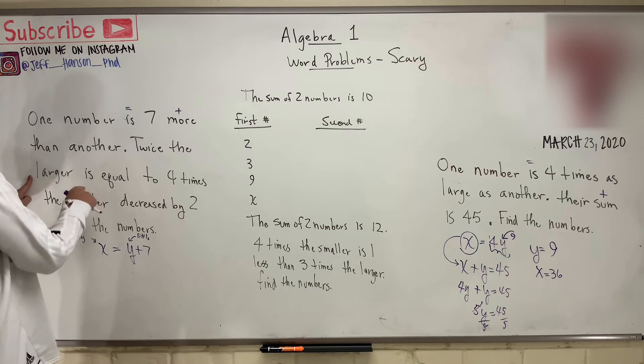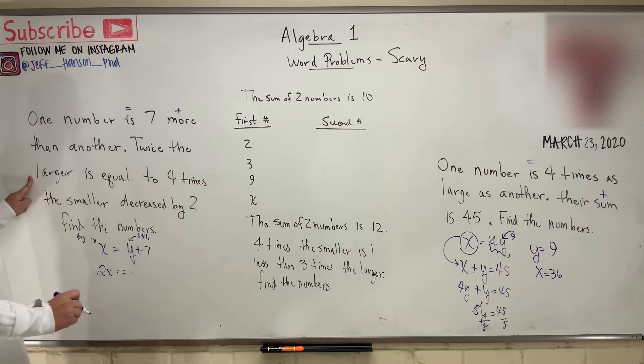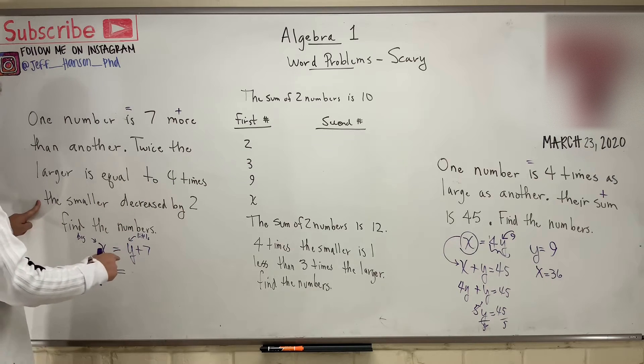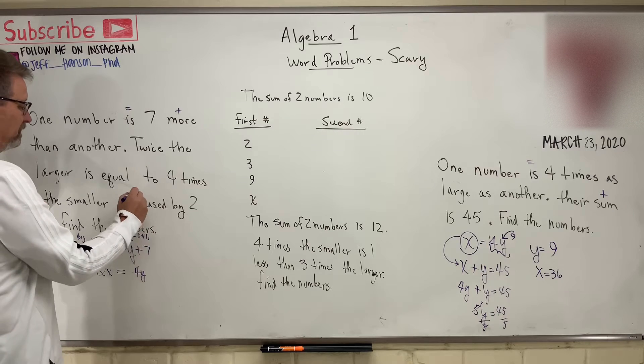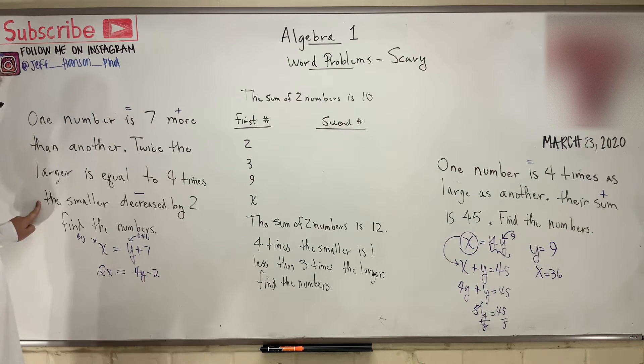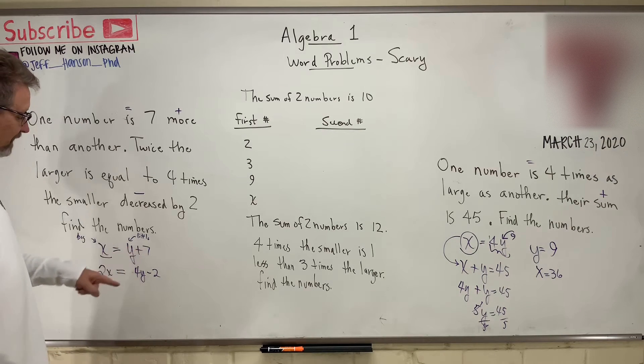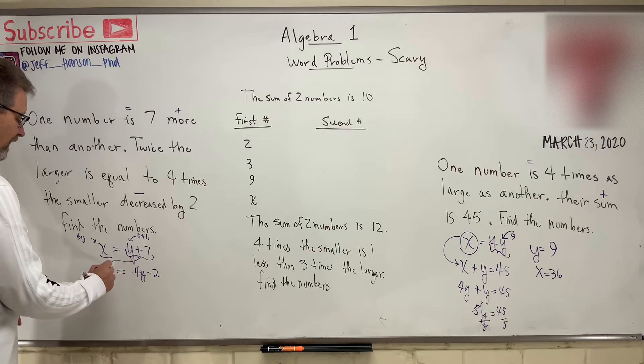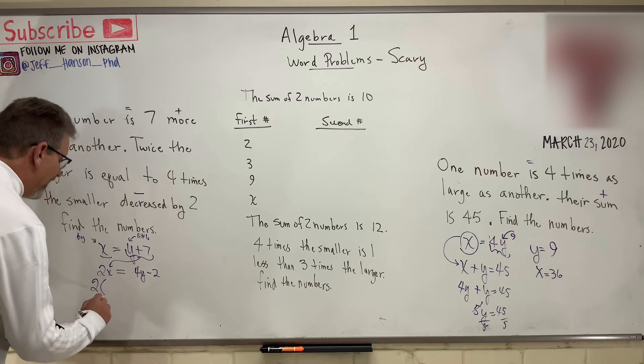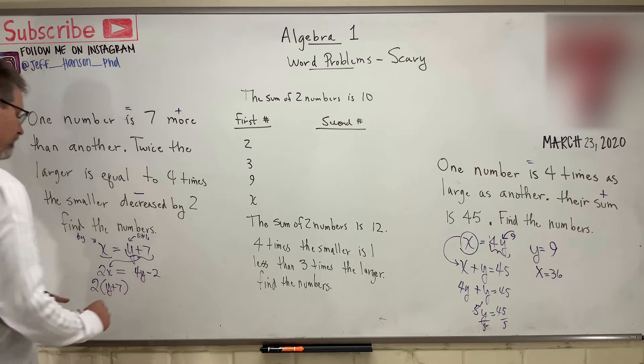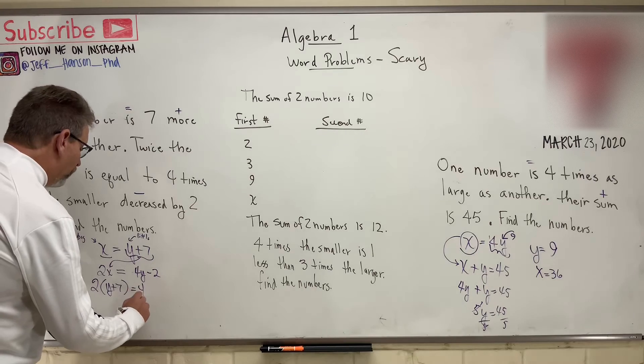Twice the bigger number. That's the bigger number, so twice him, two X is equal to four times the smaller number. Four times the smaller number, the smaller number is Y. So how about four Ys, decreased by two. What does decreased mean? Minus. Minus two. Find the numbers. We already know what X is equal to, it's equal to that business right there. So let's plug all of this stuff in for X. Two times, I'll plug it in for X, Y plus seven. But I put him in parentheses because what's in the parentheses? X, all of that business. Is equal to four Y minus two.